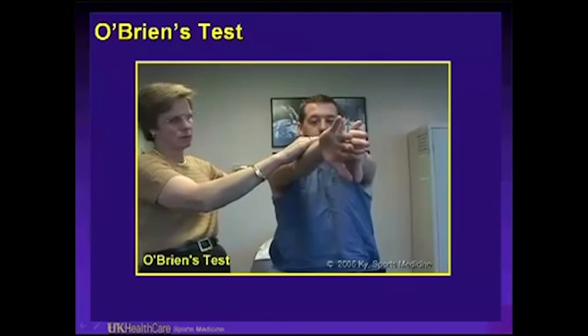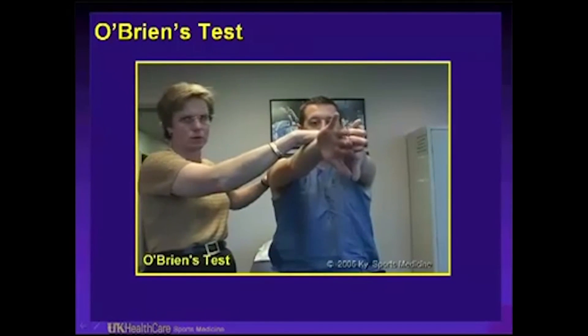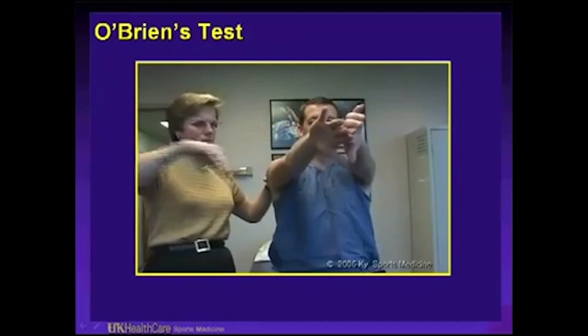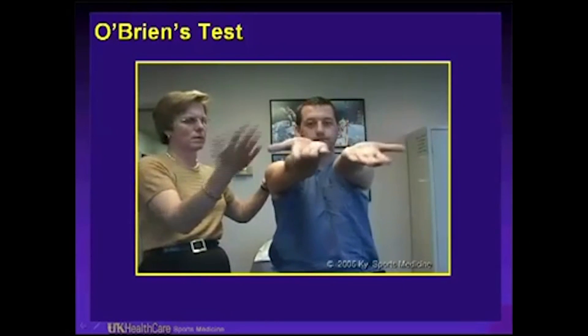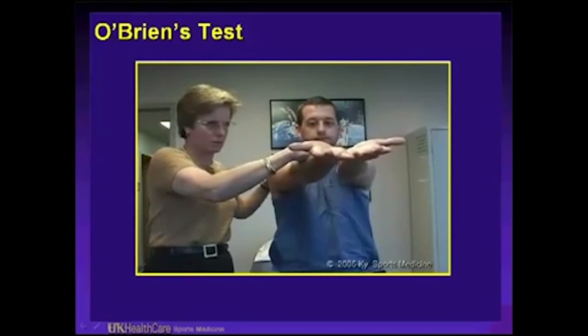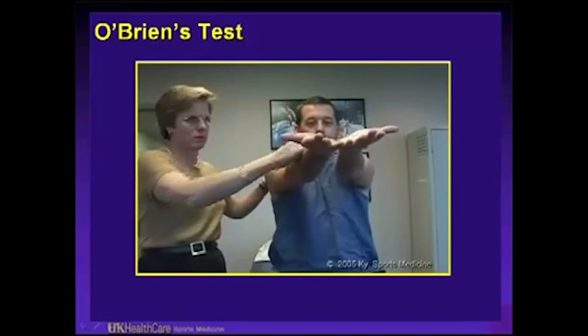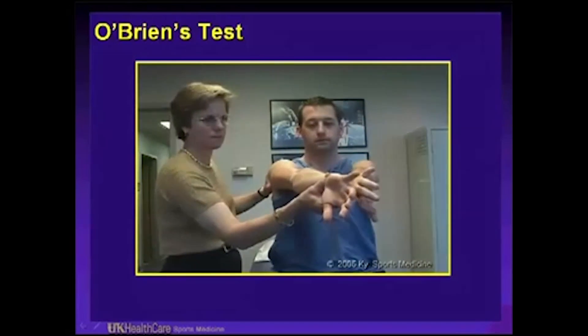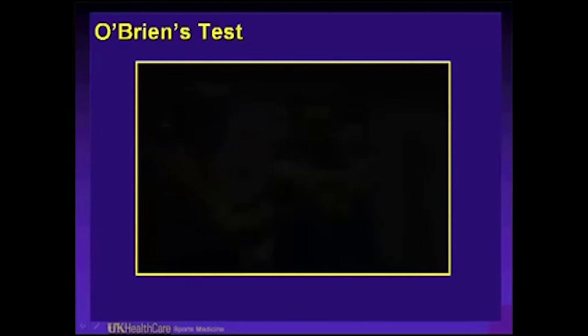Here is a video of this test. The patient is in the empty can position. I'm asking him to resist me. If they hurt in their proximal biceps and then it improves in the palm up position, that indicates a SLAP tear and irritation of the biceps. If the pain is more superficial, that would indicate a primary acromioclavicular problem.